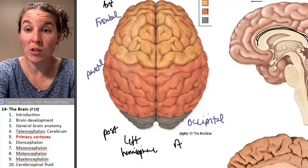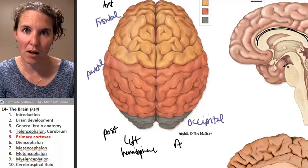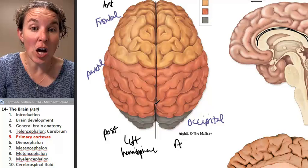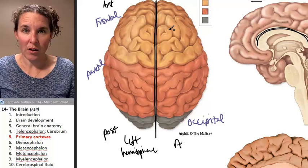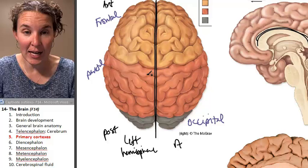We're going to zoom into two specific locations on our cerebrum that have unique and important functional significance. First, we have to identify a couple of landmarks that are important. One of the landmarks is the longitudinal fissure — that's the fissure that separates the right and left hemispheres of the brain. This longitudinal fissure gives us an orientation when we're looking down to find these other structures.